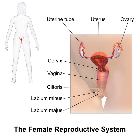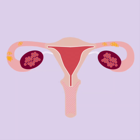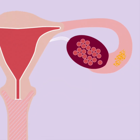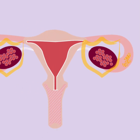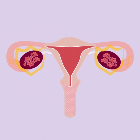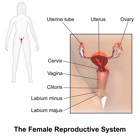The vaginal opening allows for the exit of menstrual blood and childbirth, and entry for tampons and intercourse. The hymen is tissue that partially covers the vaginal opening. The urethral opening is the exit for urine.